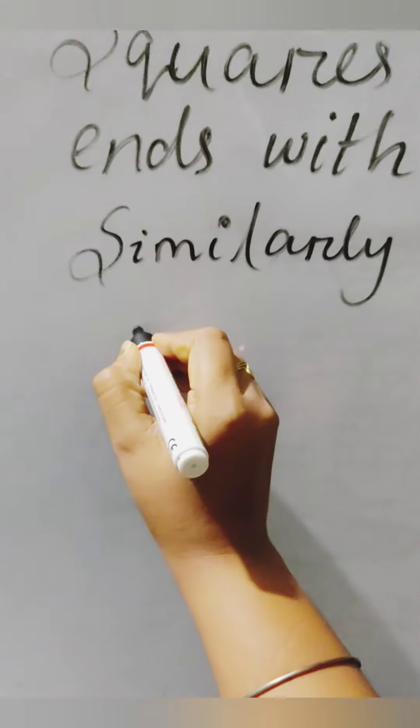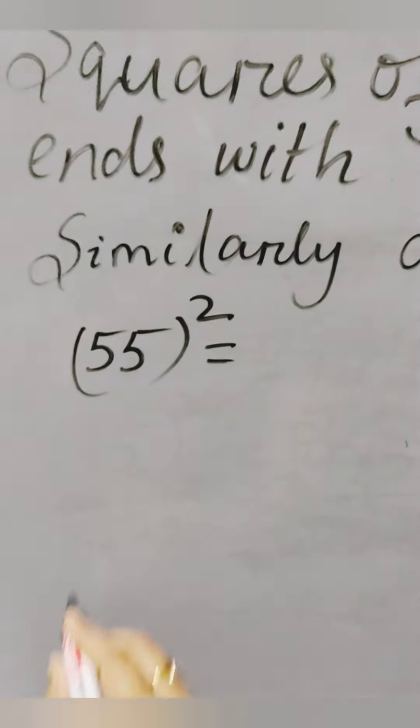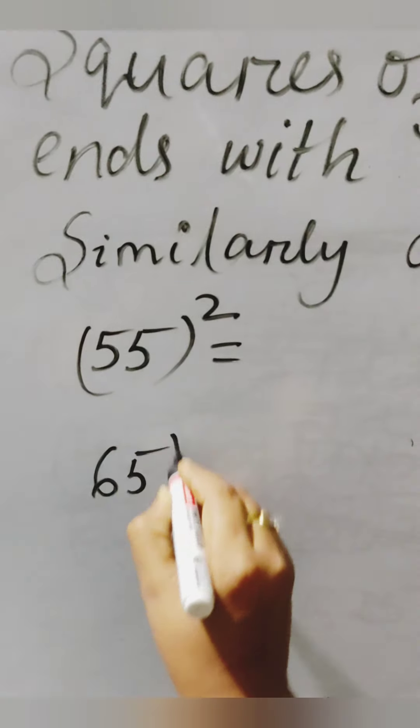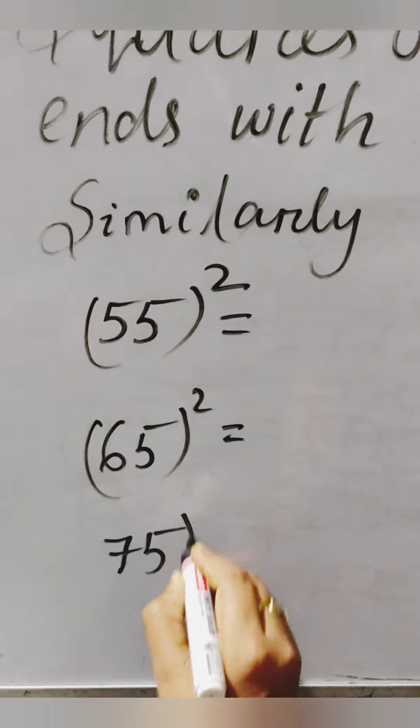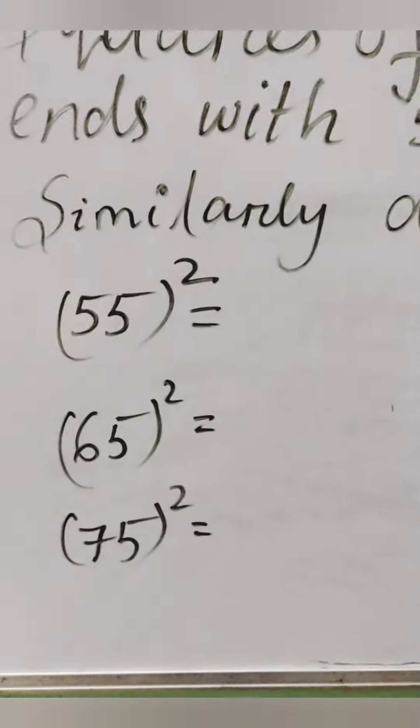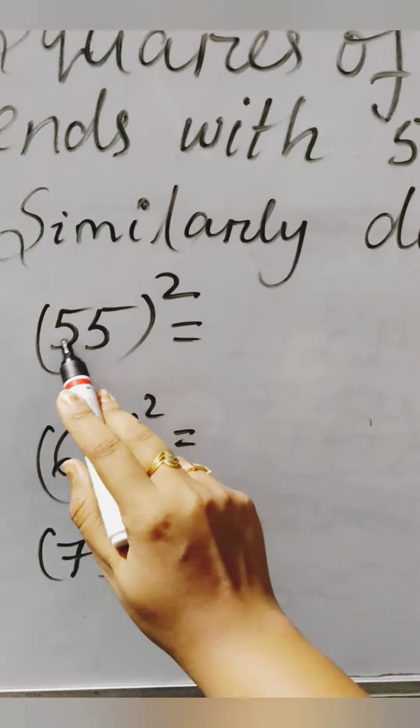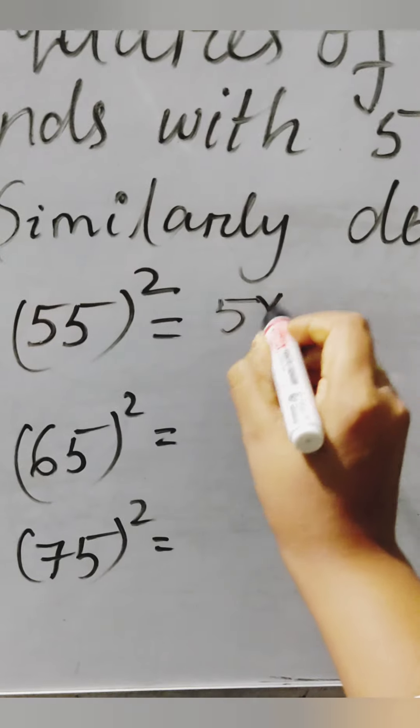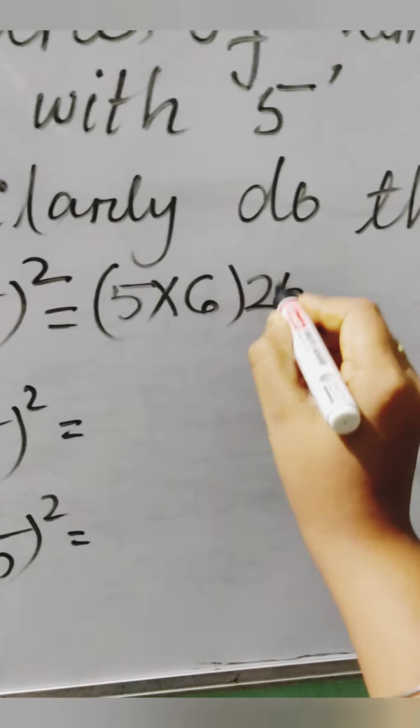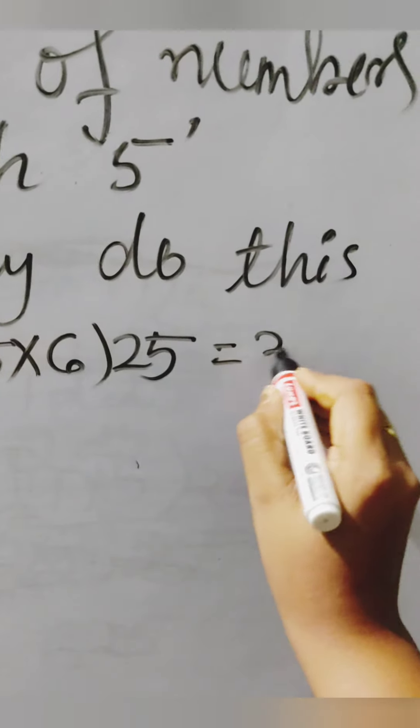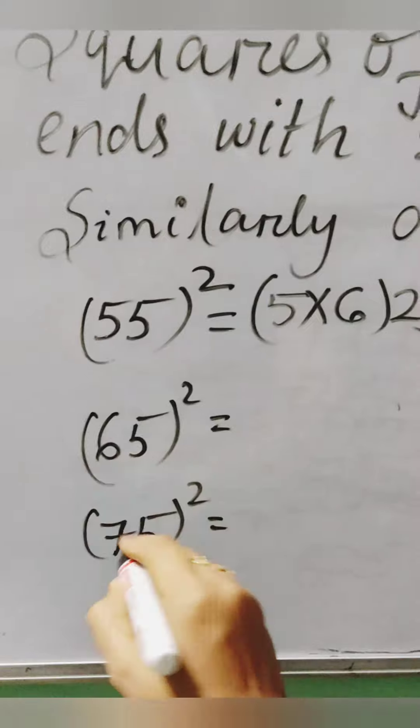Now do this: 55 squared. Let's get started. As you see that 5 is in the tens place, after 5, 6 will come, and 5 squared is 25. So the answer is 3025. Is it simple?